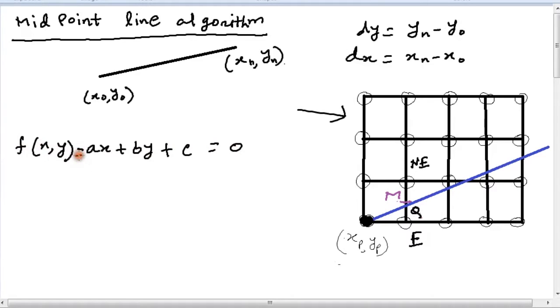We also know that the equation of a line in slope intercept form can be given by y equals mx plus b, where m is the slope and can be given by dy by dx, where dy is equal to yn minus y0 and dx is equal to xn minus x0.